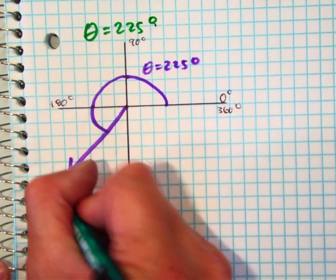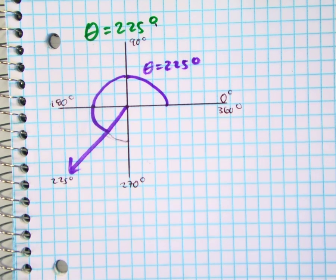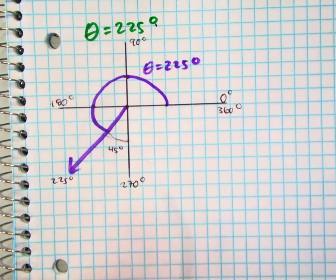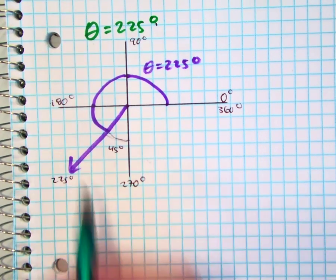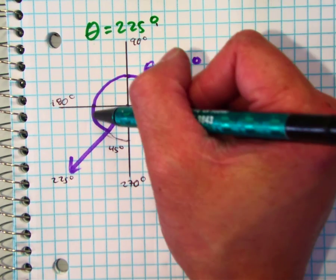Class, how much more, if this is 225, how much more is it in this direction? This would be a 45-degree angle, right? 225 plus 45 gives me 270. How much is this angle then?